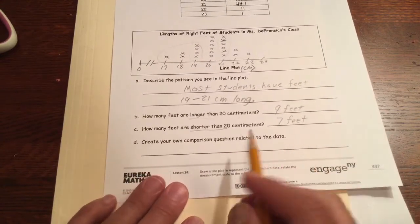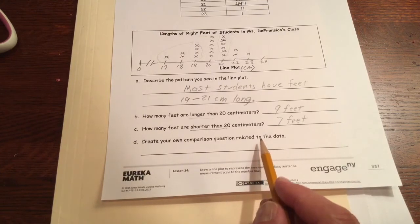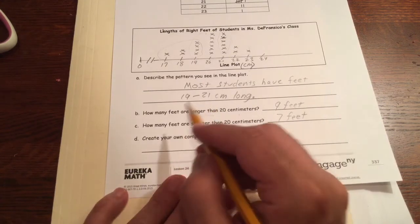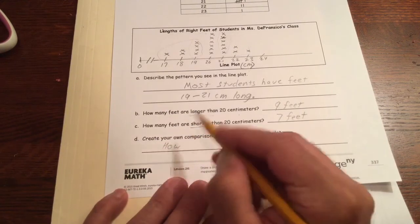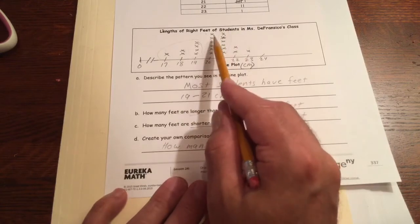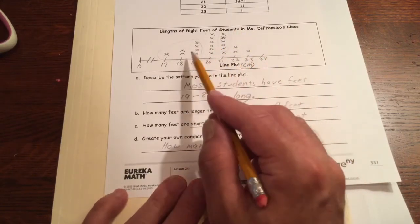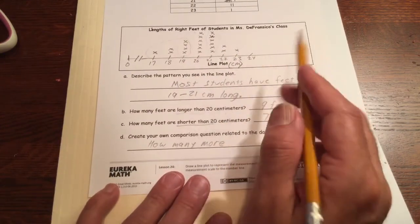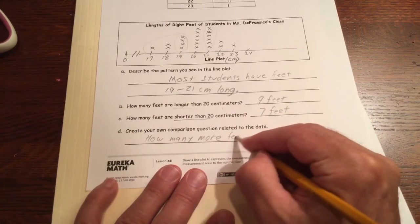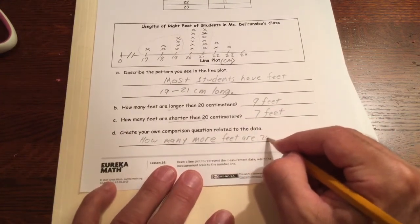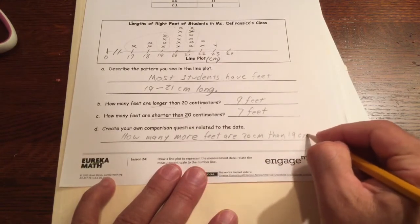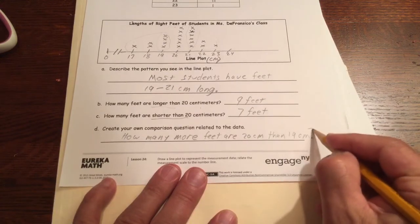And then we'll make up my own question related to the data. That's, let's say, how many more... Now you can compare any two measurements. Say how many fewer, how many more, or what's the most, or what has the least, or how many have two, or how many have four. I'm just going to say how many more feet are 20 cm than 19 cm. There's my question. Oh, it's a question mark because it's a question.